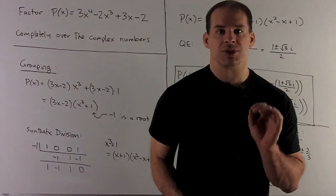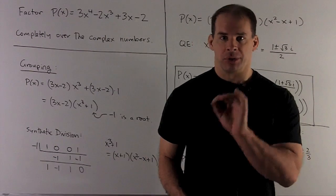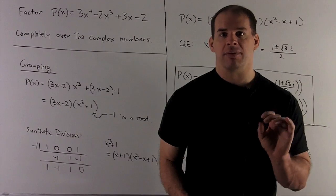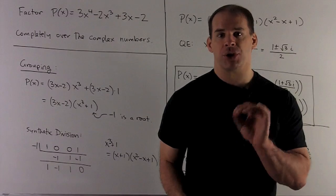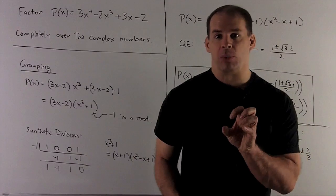My method is going to be grouping. The idea is we're going to take our polynomial, put the terms in groups, and see if we can factor out a common term from each group. Once you factor out, you recombine what's left.